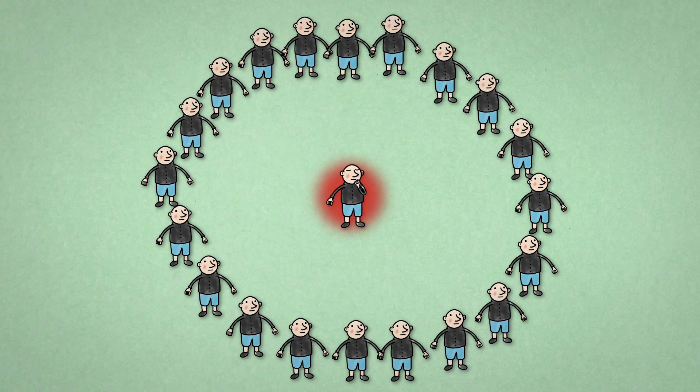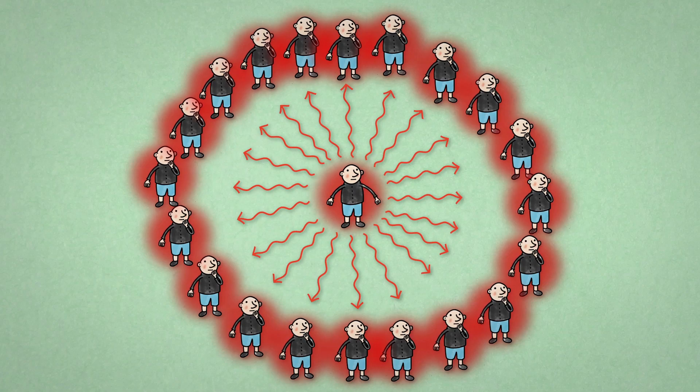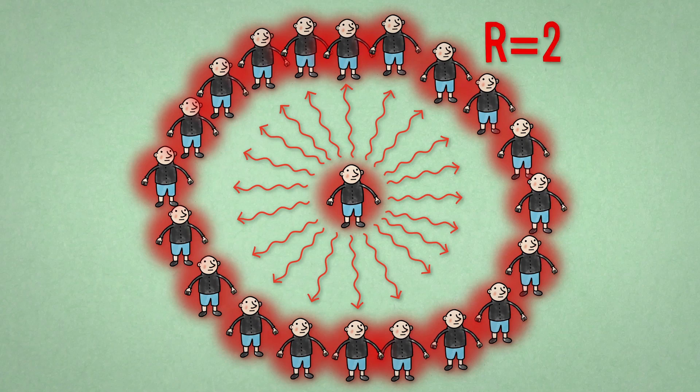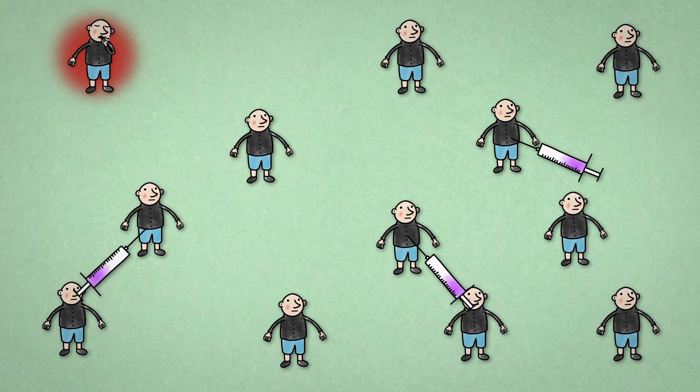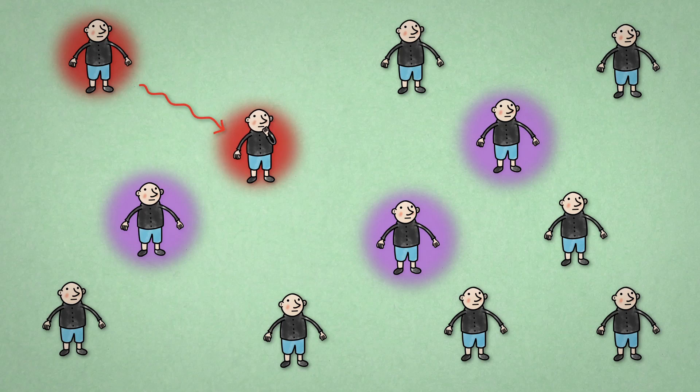With a disease like measles, this number can be as high as 20. One patient with measles can infect about 20 others. This is why outbreaks of measles are much harder to combat with vaccinations.